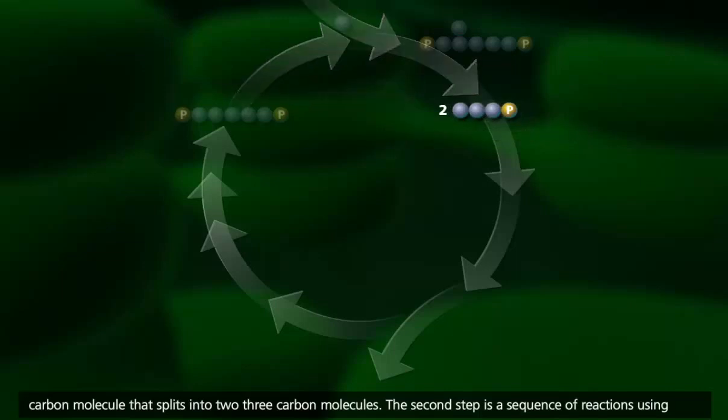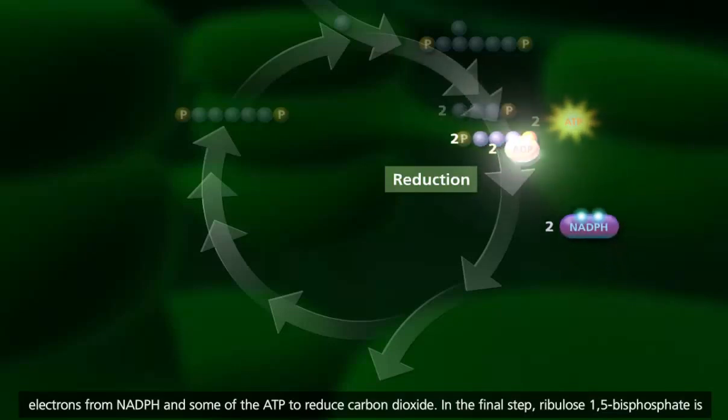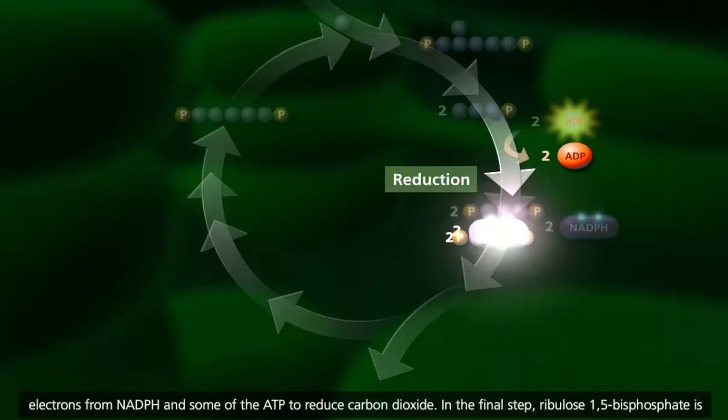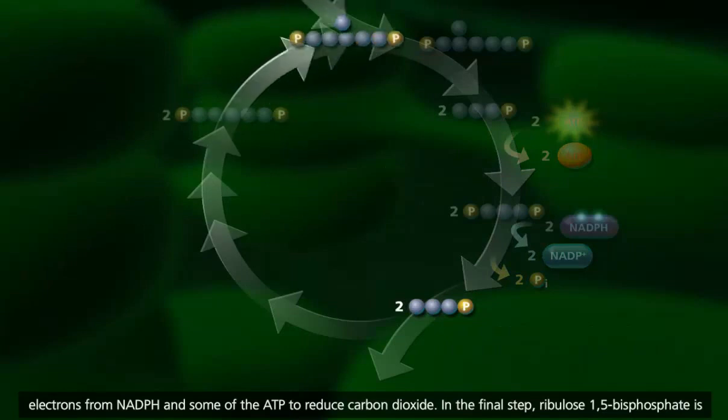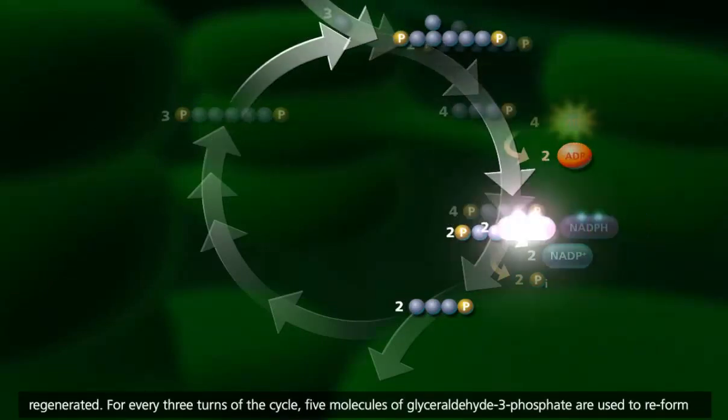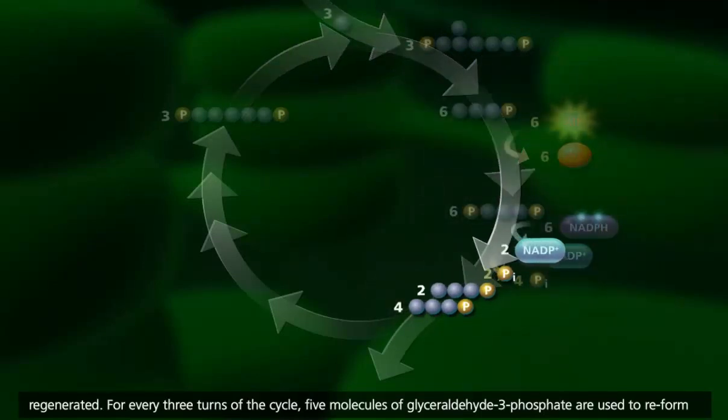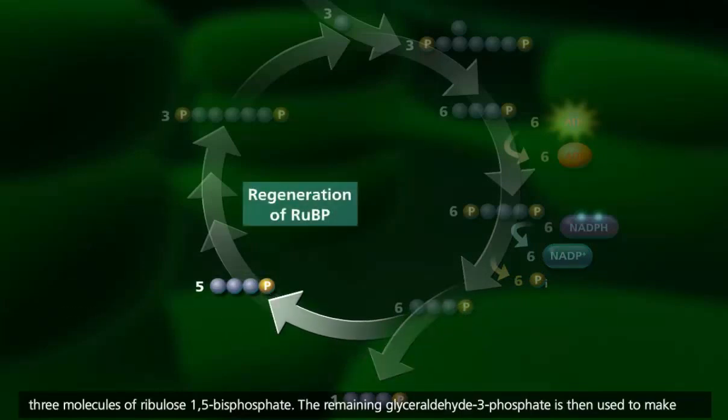The second step is a sequence of reactions using electrons from NADPH and some of the ATP to reduce carbon dioxide. In the final step, ribulose 1,5-bisphosphate is regenerated. For every three turns of the cycle, five molecules of glyceraldehyde-3-phosphate are used to reform three molecules of ribulose 1,5-bisphosphate.